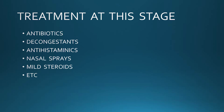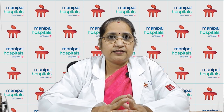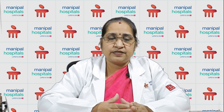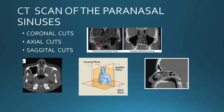If the patient does not respond to medical treatment after two or three courses, we proceed with a CT scan of the paranasal sinuses. This CT scan is taken in three planes: coronal, axial, and sagittal, as shown in the pictures. In the coronal picture, you can see one sinus is completely filled and the other is free. We correlate all three planes to determine the extent and location of sinusitis before proceeding to surgery.